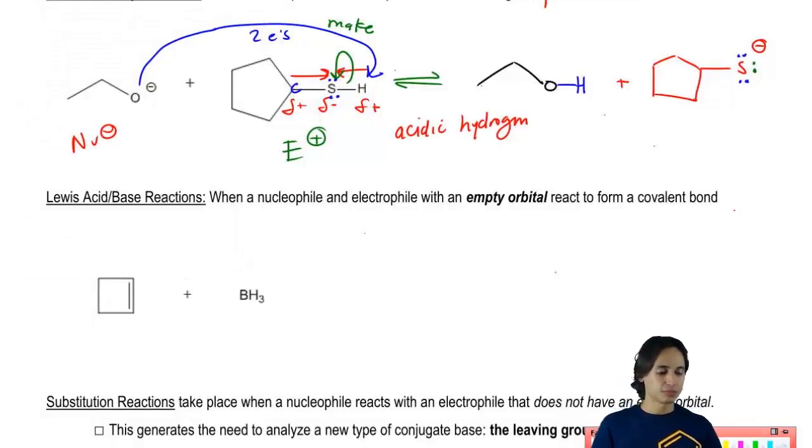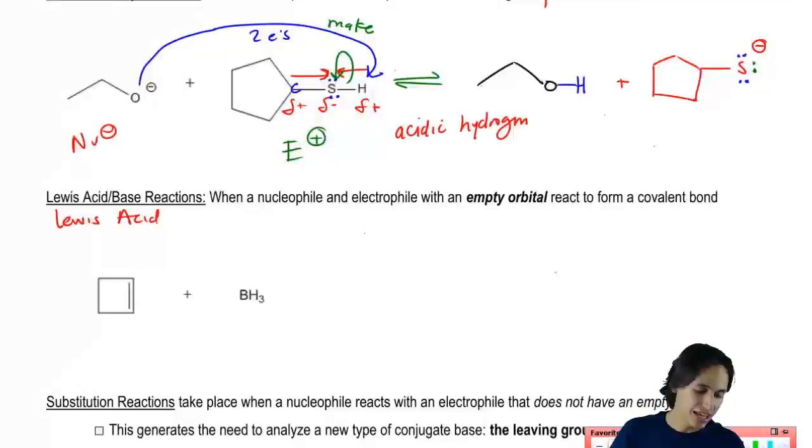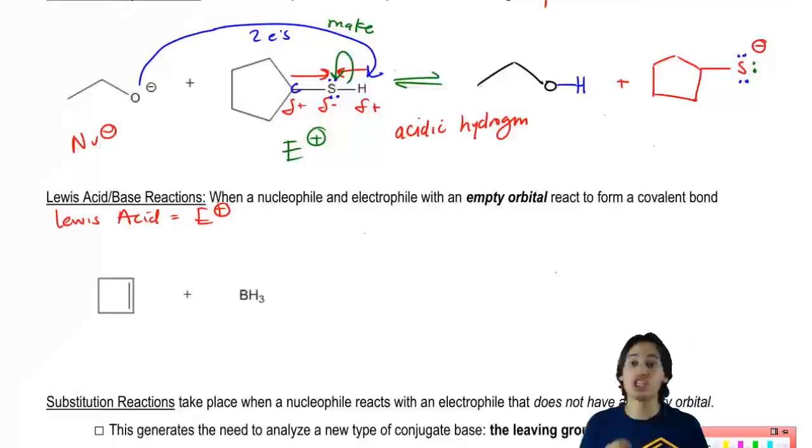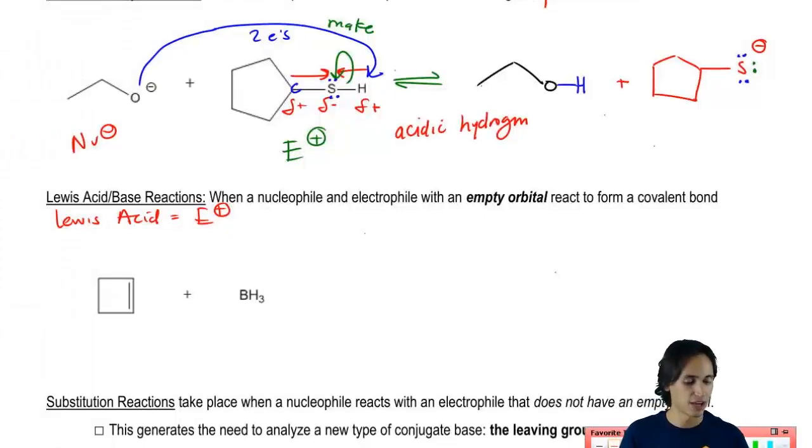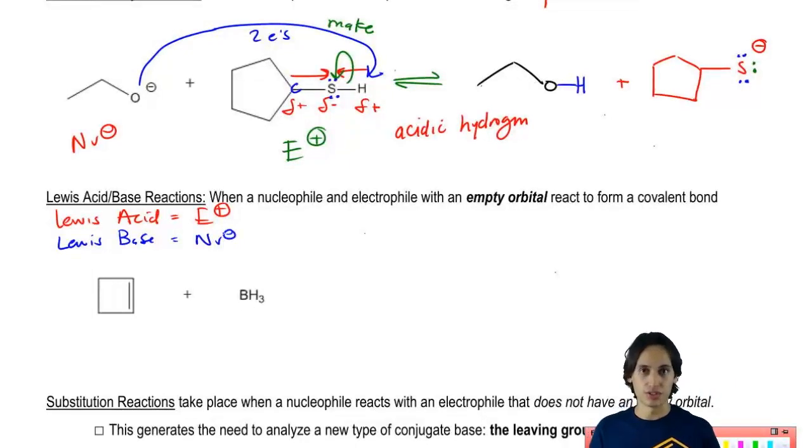Well, remember that Lewis acid is actually the definition of an electrophile. Those two words are actually synonymous with each other. Lewis acid means it's a good electron acceptor. Remember that a Lewis base is synonymous with nucleophile. It means that it's good at giving away electrons.